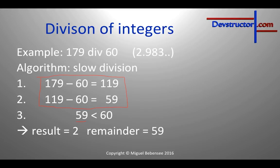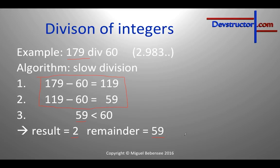This example has something to do with our timer. We have a seconds counter, and this seconds counter has the value 129. Now I would like to know the minutes and seconds of this counter. I'll do an integer division by 60 to get the minutes, and this will return 2. Then I'll do a modulo calculation to get the remainder, and the remainder will be 59. This is the correct result — the timer should display 2 minutes and 59 seconds.